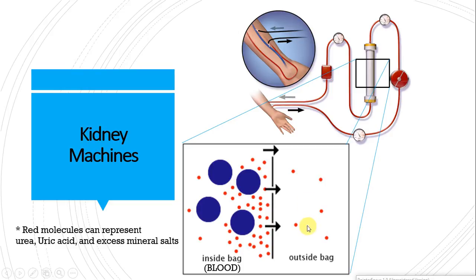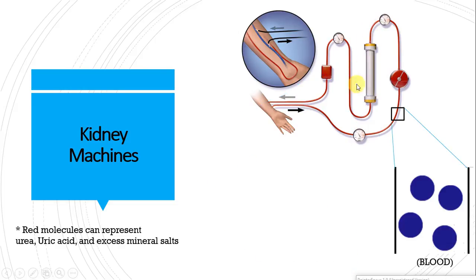And again, the solution on the right hand side will have very low concentrations of waste products. So the waste from the blood will diffuse out naturally. So ideally, when the blood comes out through here, the top part here, you'll have blood that is very, very clean, devoid of all the waste products.